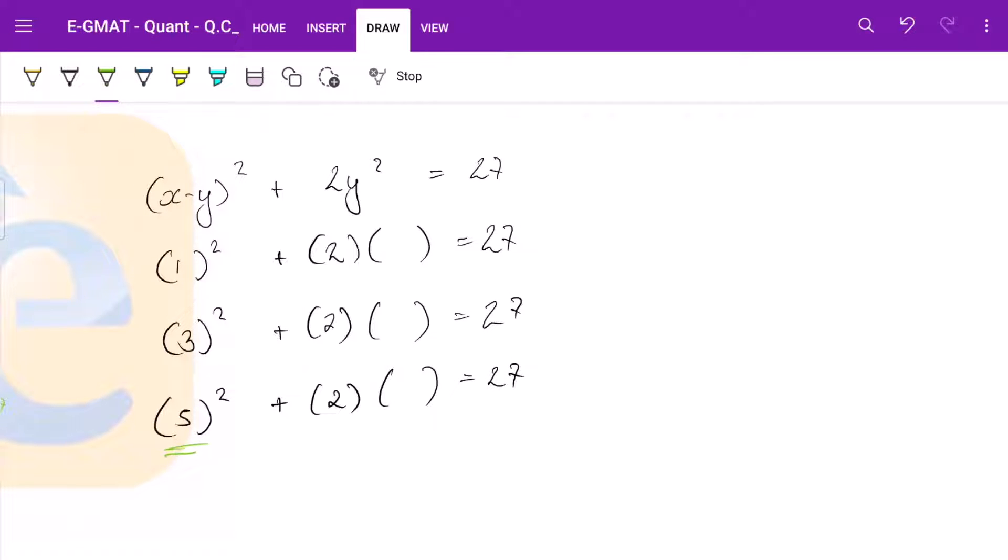So if this is 25, here it should be 1. If it is 9, then here again it should be 9, 9 as in, so it is 1 square basically. It is 3 square basically. And then again here it should be 13. This is not a perfect square and we need 2 times perfect square. So we can safely eliminate this case also.